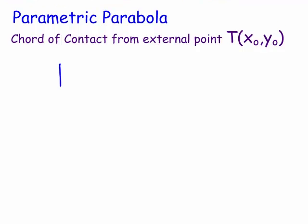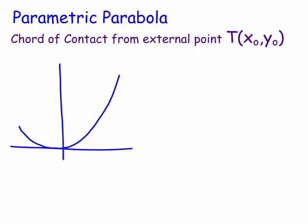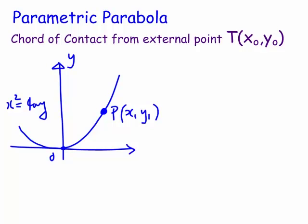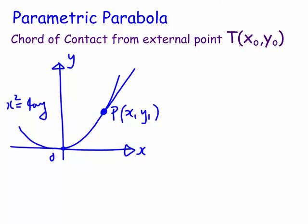We've actually done the parametric one before, but let's just have a quick look. We have a point, say, (x1, y1), and we know the equation of the parabola is x squared equals 4ay. We really want the tangent's equation.